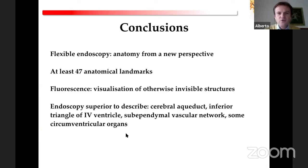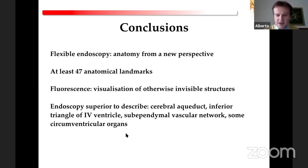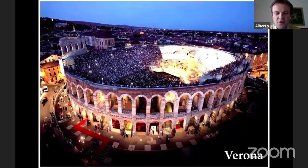To conclude: flexible endoscopy allows visualization of the ventricular system anatomy from a very new perspective. We have counted at least 47 anatomical landmarks inside the four ventricles. With fluorescence, we are able to visualize structures that would otherwise be completely invisible, such as the subependymal vascular network and some of the circumventricular organs. Thank you very much.